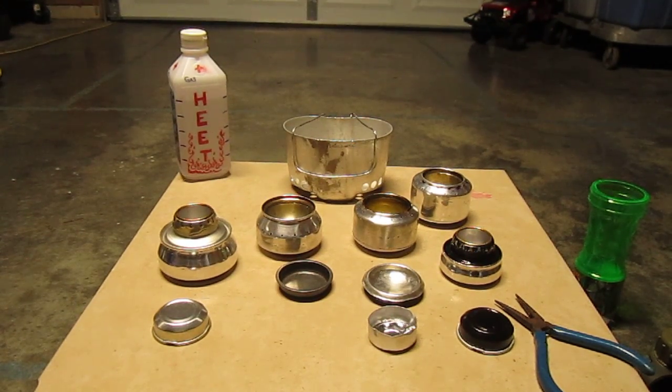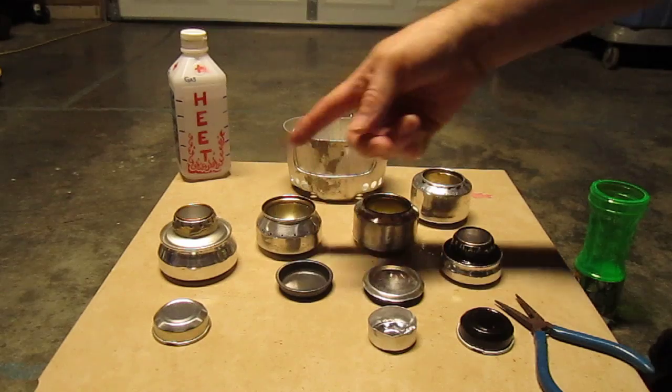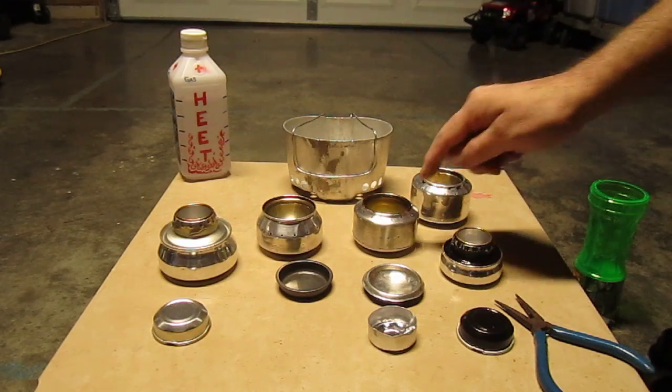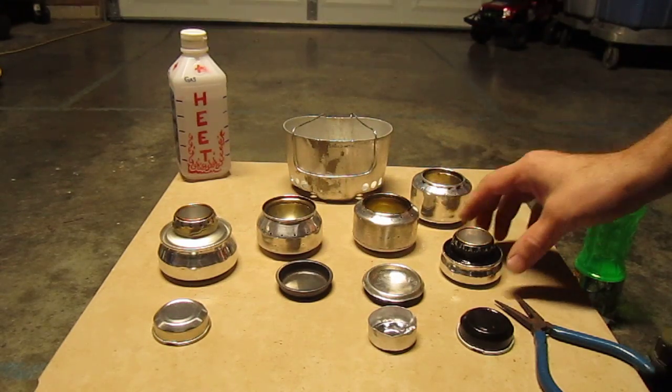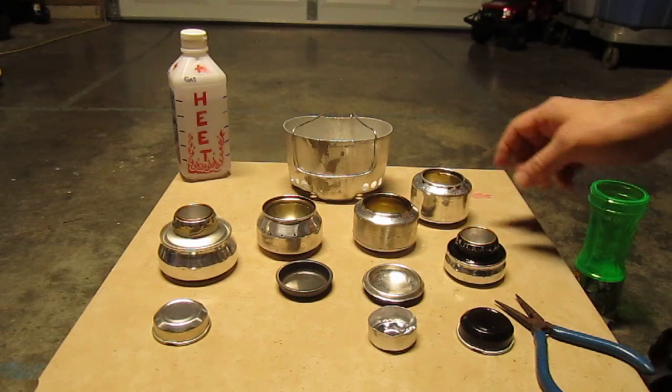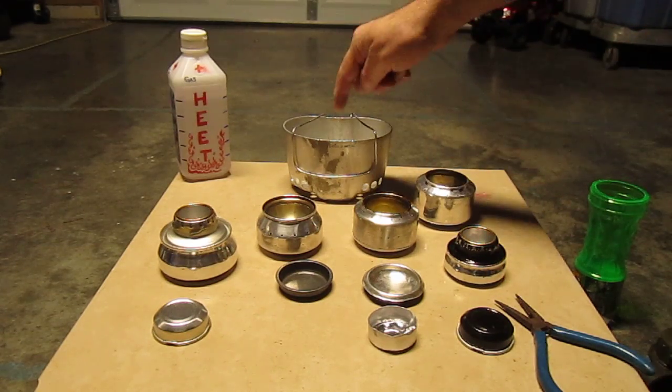Okay, what I'm going to do here is a burn test on each one of these. There's a Trangia that I've made here. This is the top of a beer can, bottom of a Coke can, another small Monster Cup Trangia, and there's another one that I'm going to put in here.